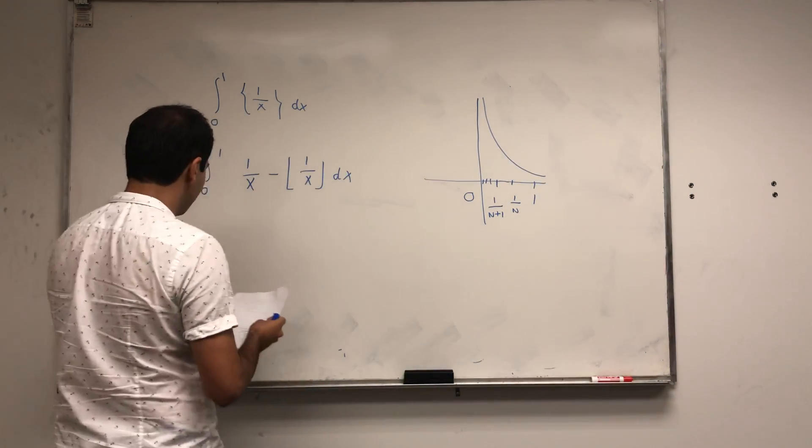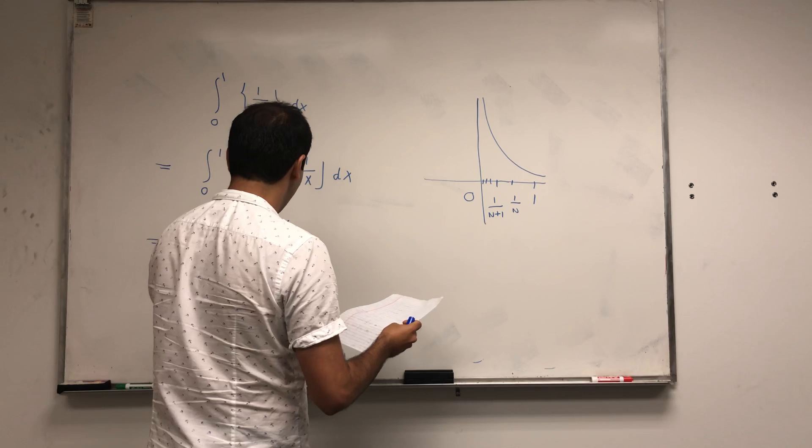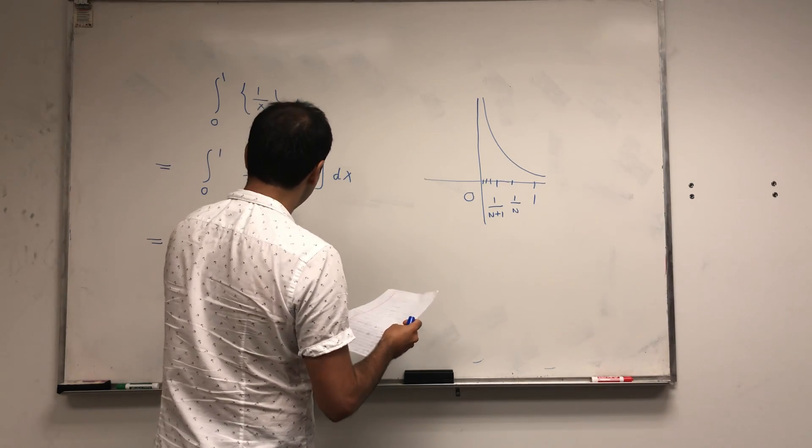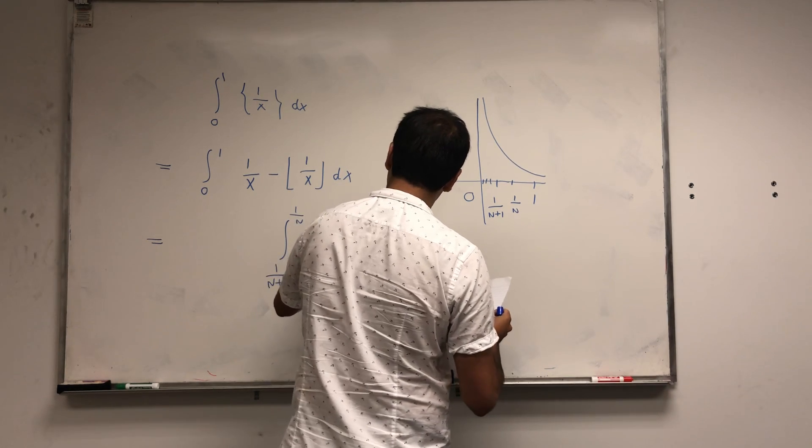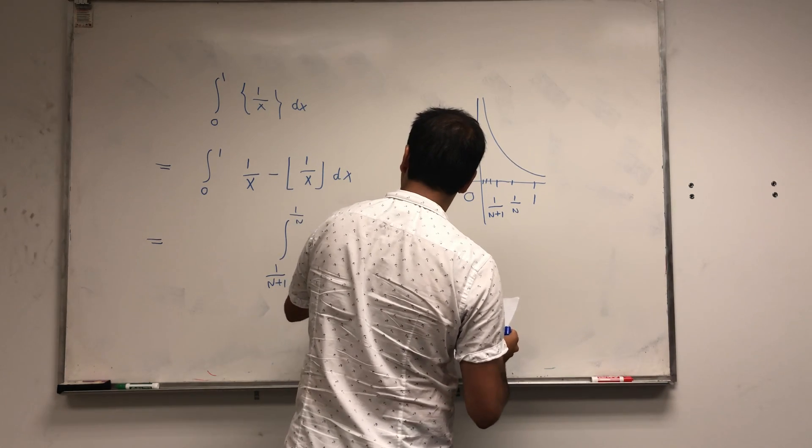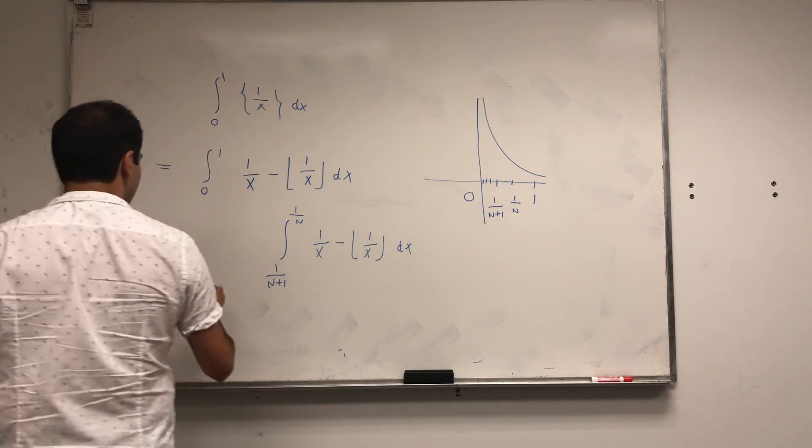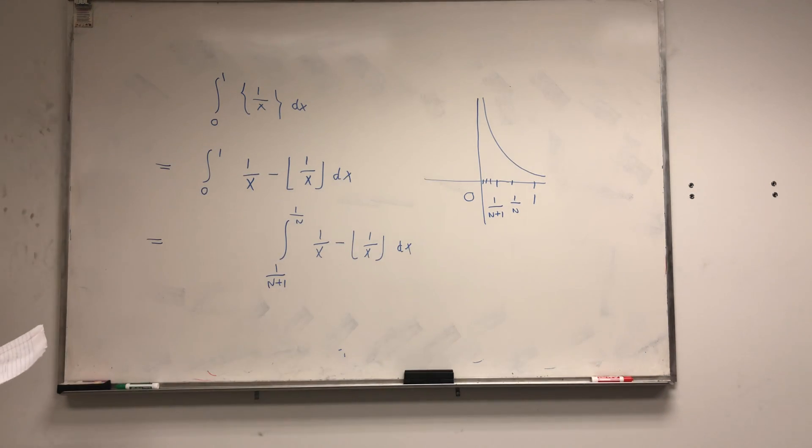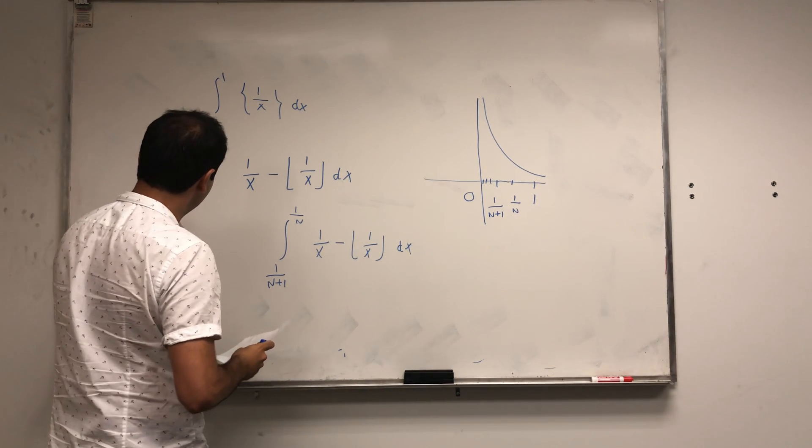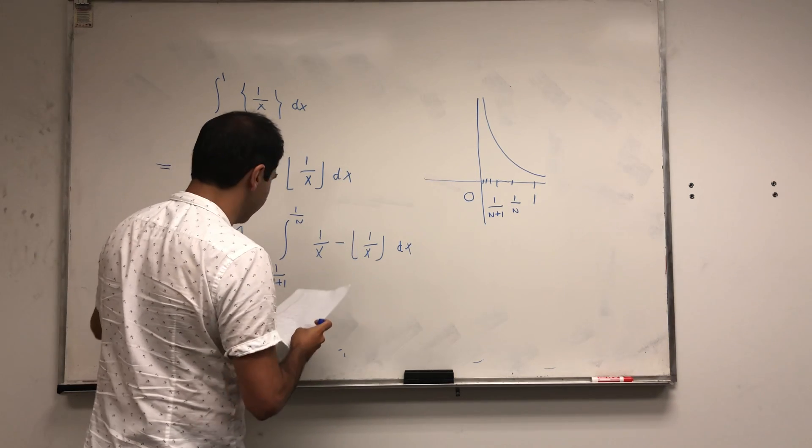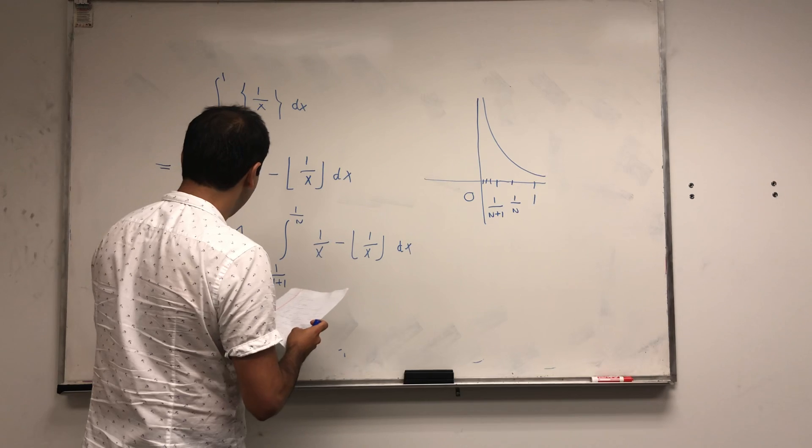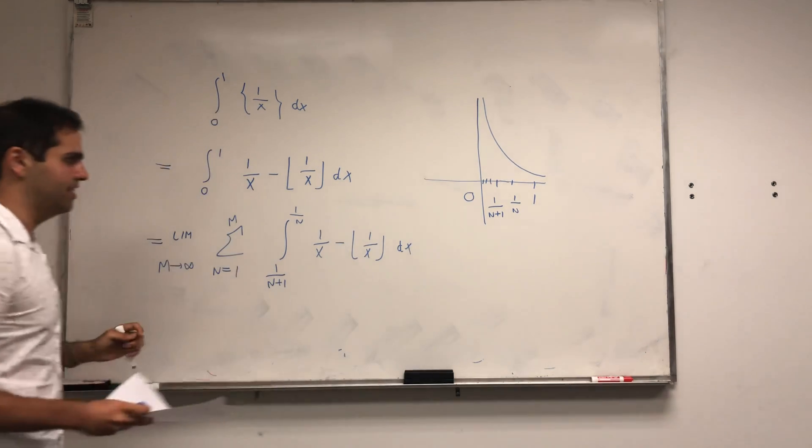So what this becomes, it's little pieces of this form, 1 over n plus 1 and 1 over n, integral of 1 over x minus floor 1 over x dx. And now we want to take an infinite series, but let's just be very careful about that with partial sums, because there will be something telescoping going on.